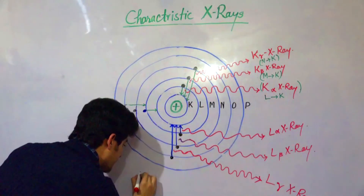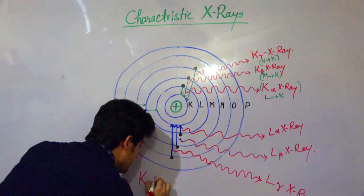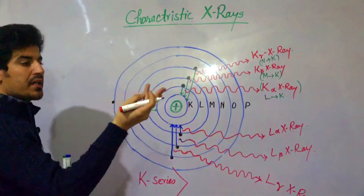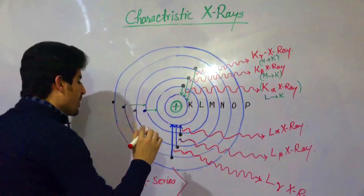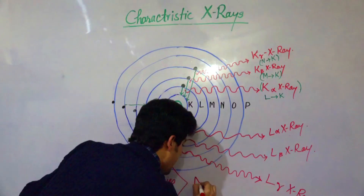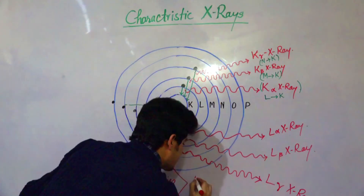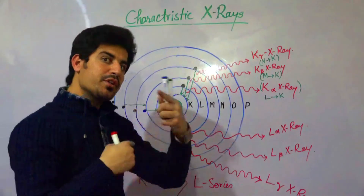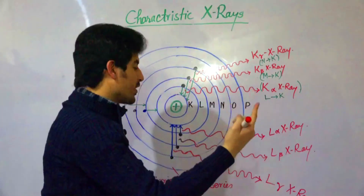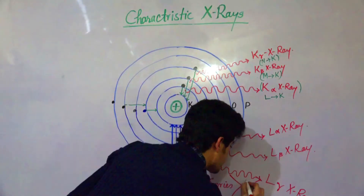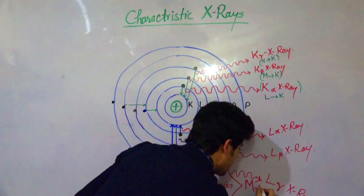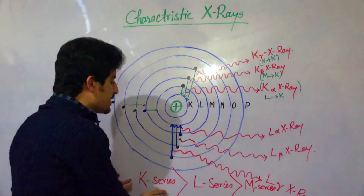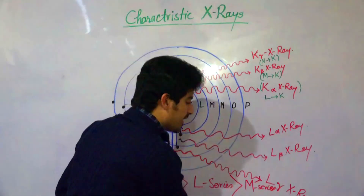The K-series X-rays — K-alpha, K-beta, and K-gamma — are more energetic than the L-series. The L-series — L-alpha, L-beta, and L-gamma — is more energetic than the M-series. So the order is: K-series is more energetic than L-series, and L-series is more energetic than M-series.